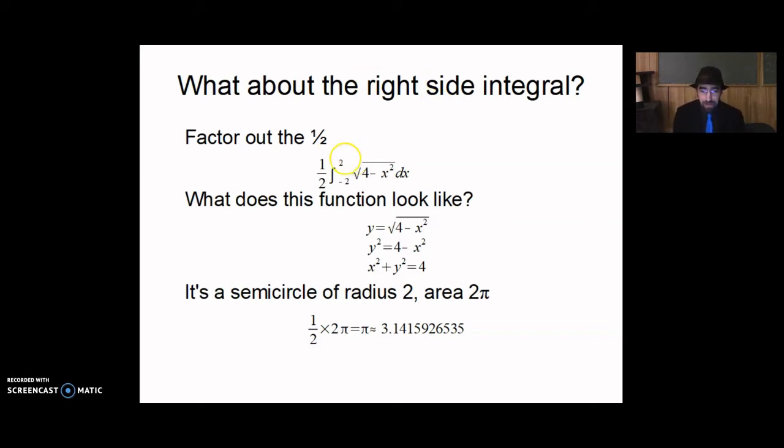The hard part is dealing with its integral from negative two to two of square root four minus x squared. Well, let's ask, what does this function here look like? What does square root of four minus x squared look like? y equals square root four minus x squared. Square both sides. y squared equals four minus x squared. Add x squared to both sides. x squared plus y squared equals four.